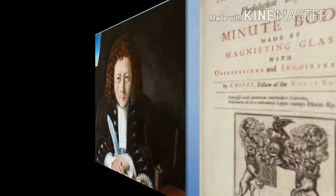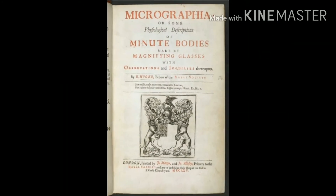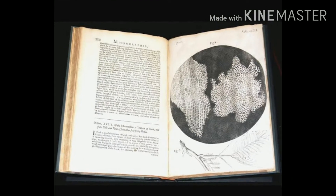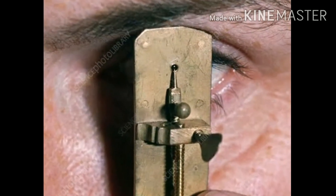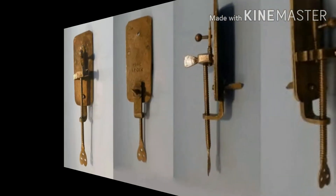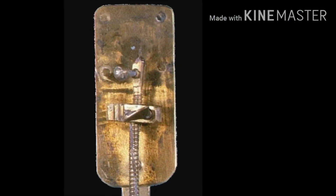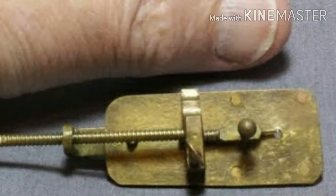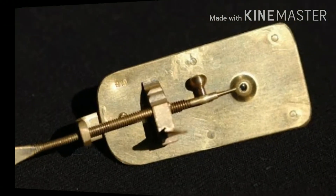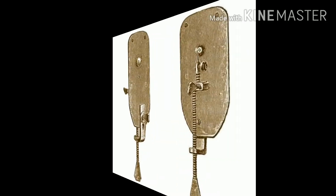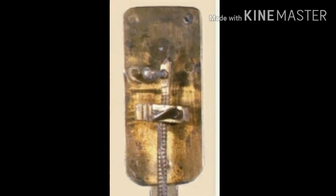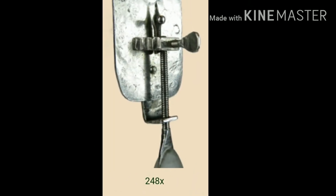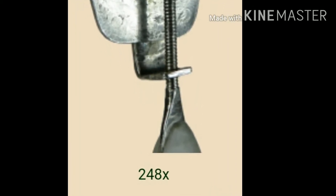Robert Hooke's experiments with the microscope inspired Anthony Van Leeuwenhoek to further explore the micro world. Leeuwenhoek began to make lenses and made observations with the microscopes he produced. During his lifetime, he ground more than 500 lenses, most of which were very small. Some lenses were no larger than a pinhead. These lenses were usually mounted between thin brass plates riveted together. A large sample of those lenses were found to have magnification power in the range of 50 to 300 times.